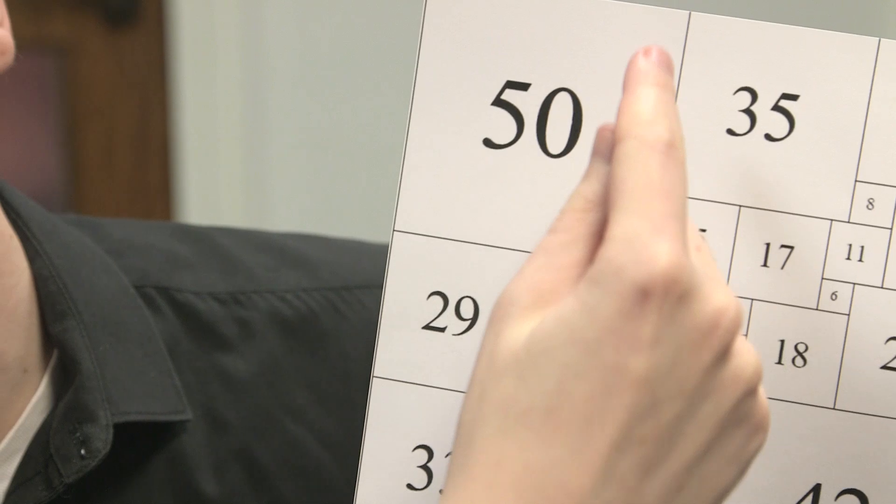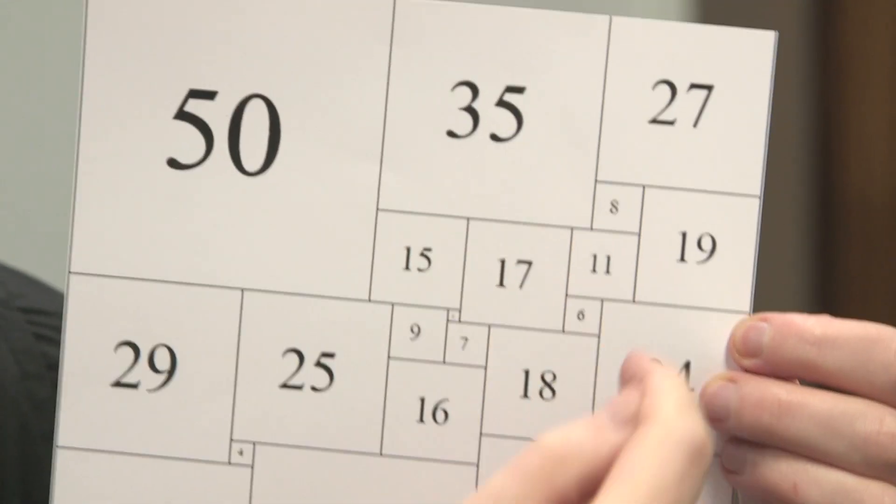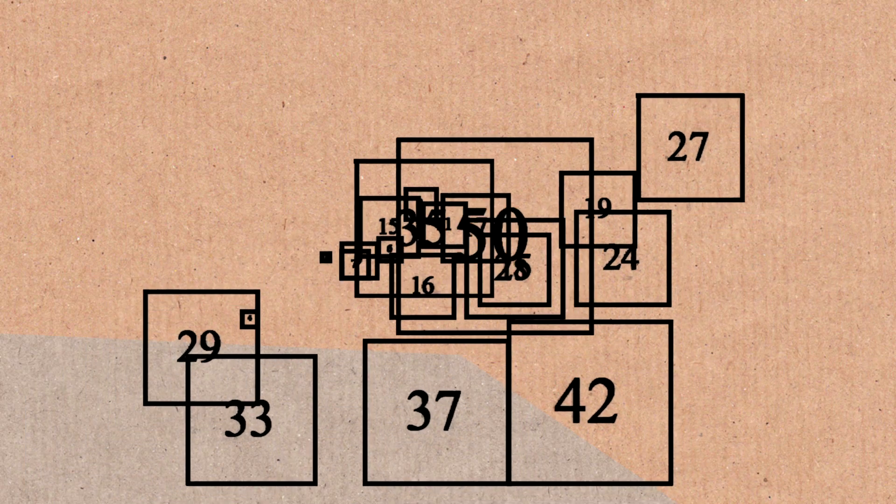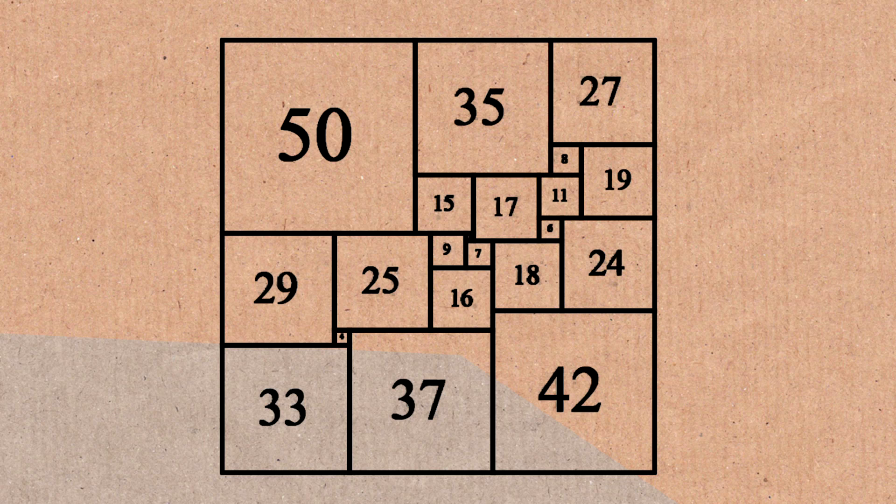But all the squares are different sizes. So you see this one here with 50, that means it's a 50 unit by 50 unit square. This one here with the 35, it's 35 by 35. All these squares are different sizes, yet they fit together to make one big square which is 112 by 112.